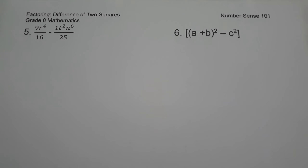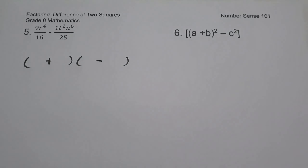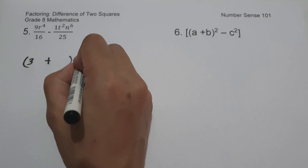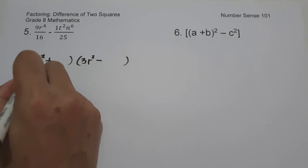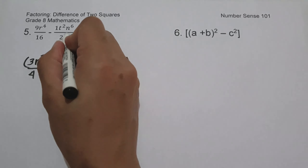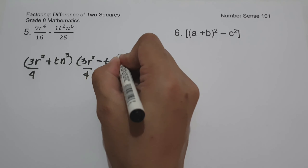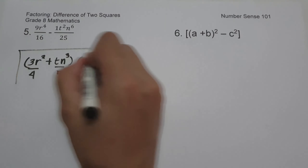In example number five, we have 9r raised to the 4th over 16 minus t squared n raised to the 6th over 25. The given expression is written in the form of the difference of two squares, so the factored form is the product of the sum and difference of two terms. The square root of 9 is 3, the square root of r raised to the 4th is r squared (dividing 4 by 2), and on the denominator the square root of 16 is 4. The square root of 1 is 1, the square root of t squared is t, the square root of n raised to the 6th is n cubed (dividing 6 by 2), and on the denominator the square root of 25 is 5. This will be our factored form and answer.